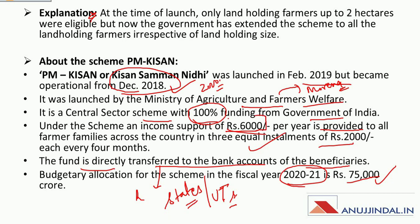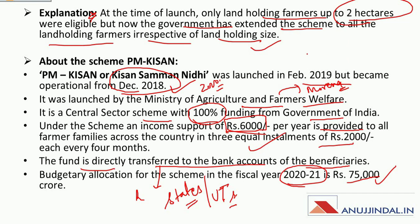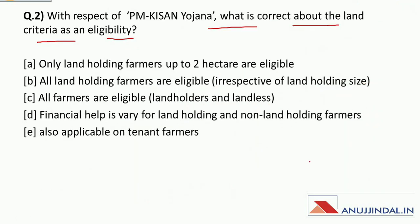At the time of launch, rupees 6000 per year was provided to farmers with land holdings up to two hectares. Later, this limit was removed and the government extended the scheme to all land holding farmers irrespective of their land holding size. Therefore the correct answer to this question is: all land holding farmers are eligible irrespective of their land holding size.